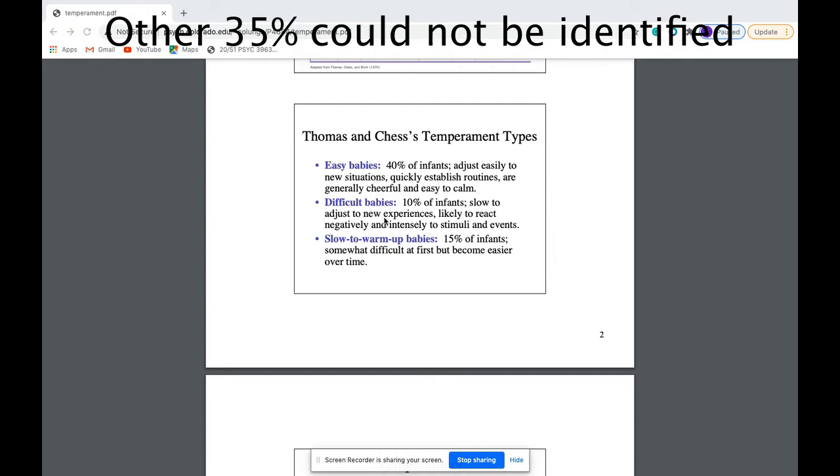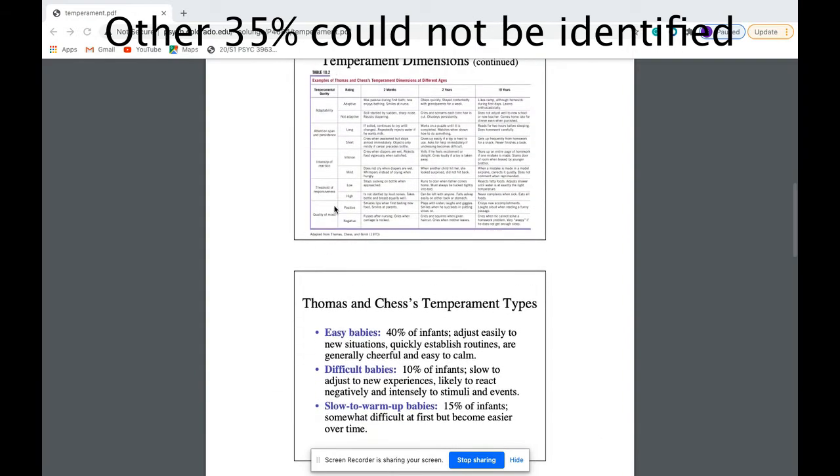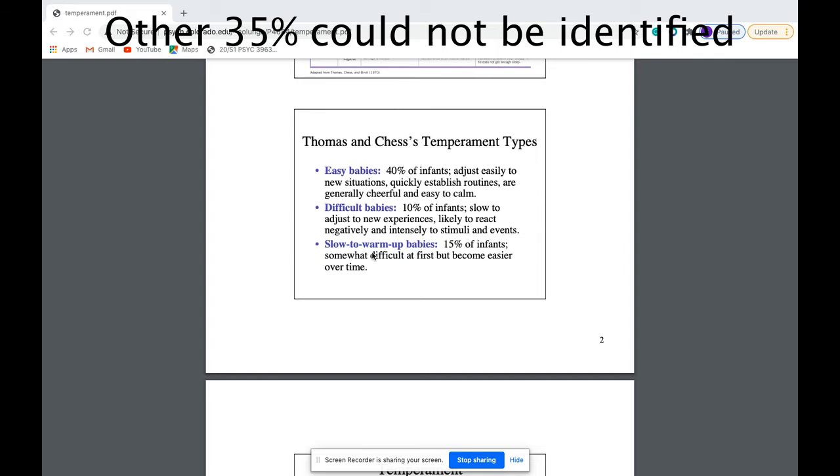And furthermore, we have the difficult babies. They're slow to adjust to new experiences, just the opposite of the easy babies. They are likely to react negatively and intensely to stimuli and events. Once again, it derives exactly from this chart that we just saw. And these slow to warm up babies, they are somewhat difficult at first, but become easier over time. This is especially true if the parents follow the term goodness of fit. If they fall within those expectations, they should especially become easier over time.